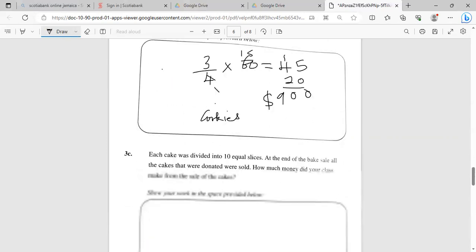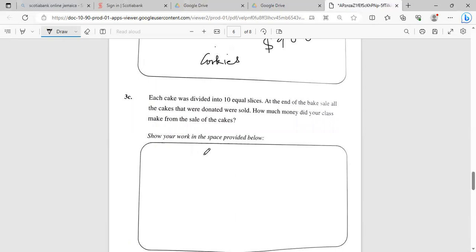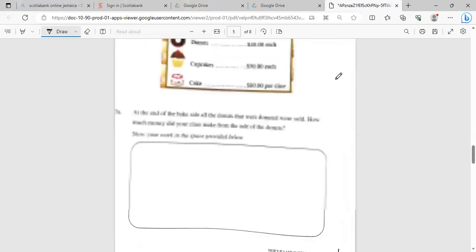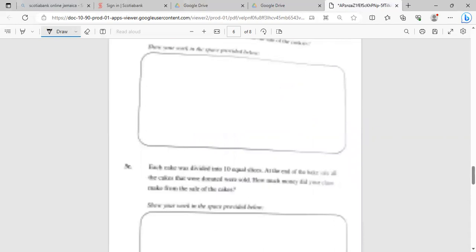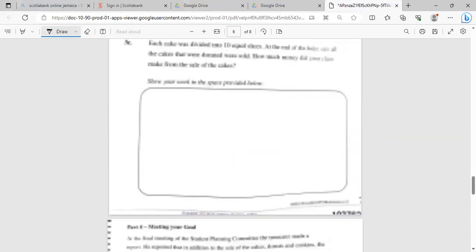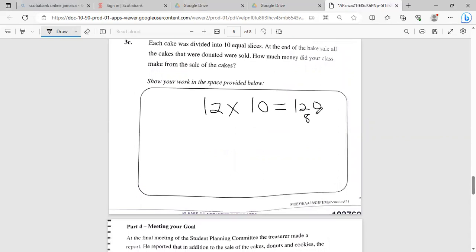It says Tracy: Each cake was divided into 10 equal parts. So we have 12 cakes and we divide them into 10, so that means we have a total of 120 slices. And each slice, let me look up the price, I think it was $80 but I don't want to make any error. So it's $80 per slice, so we're going to multiply it by 80.